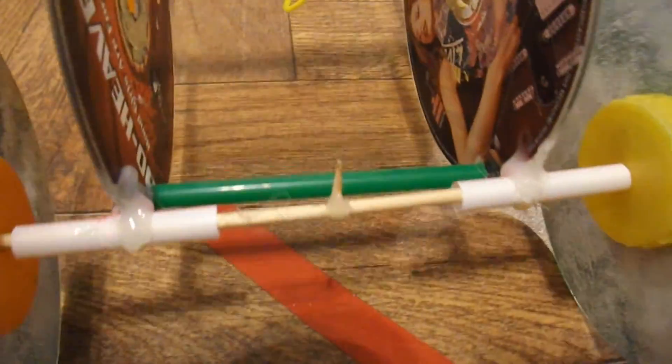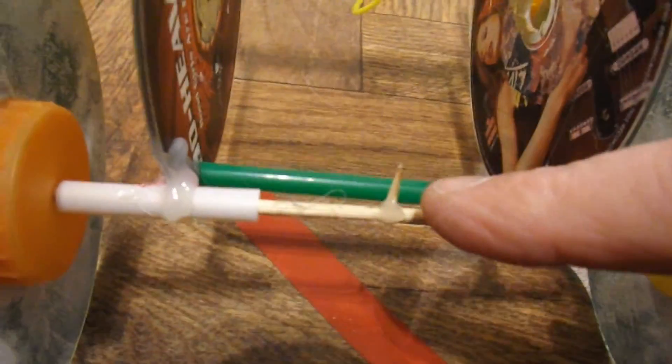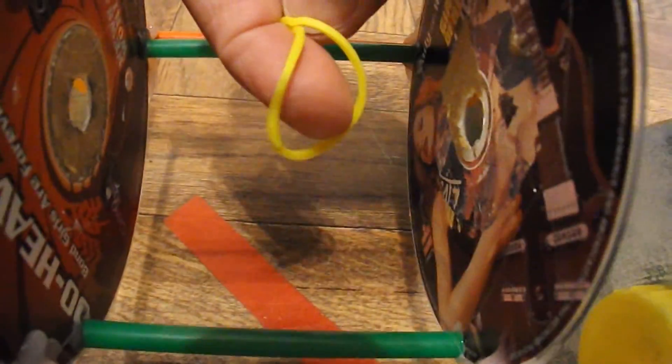The only other thing we've got there is I've glued a little bit of the barbecue skewer into the middle of the axle. So we've got something to hook the rubber band onto.